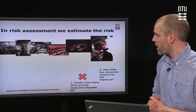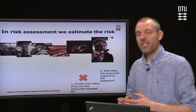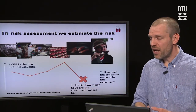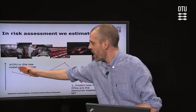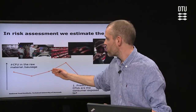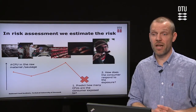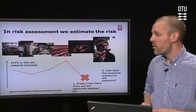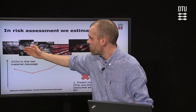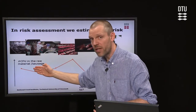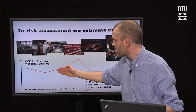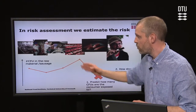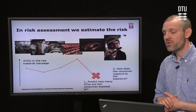The focus of microbiological risk assessment is very much on the production line, because there we can actually do something about exposure. The core activity is to develop models that express the change in number of pathogens in the product along the production line, so we can predict the number of CFUs at the time of consumption. For example, pathogens are present in primary production, then slaughterhouse hygiene lowers CFUs, sausage making and storage may allow bacterial growth, and heat treatment just before consumption gives a reduction. Describing this process allows us to predict the number of CFUs the consumer is exposed to.